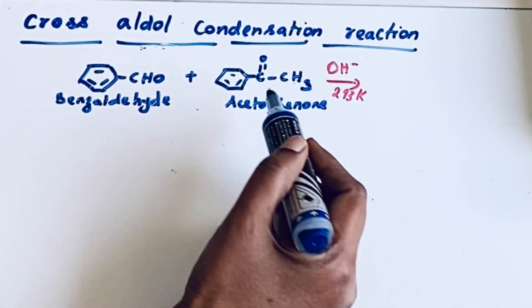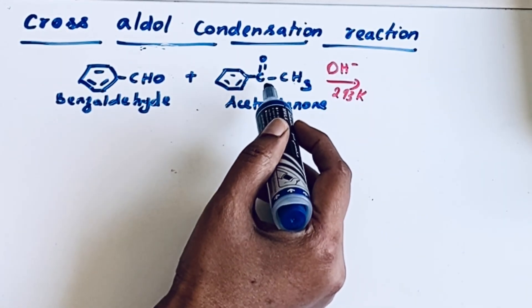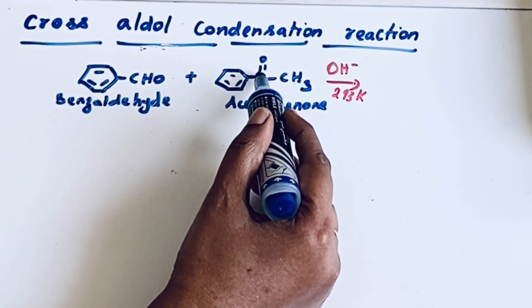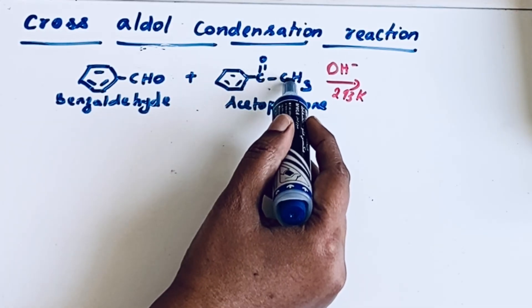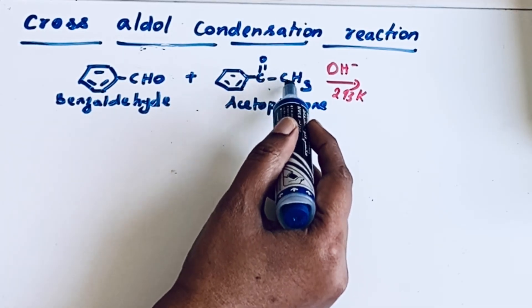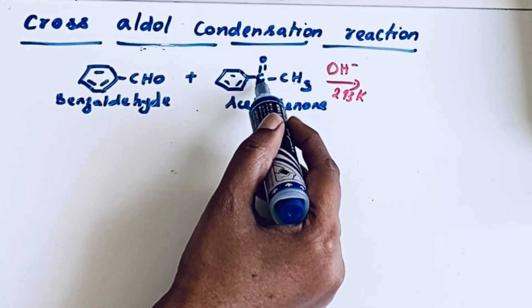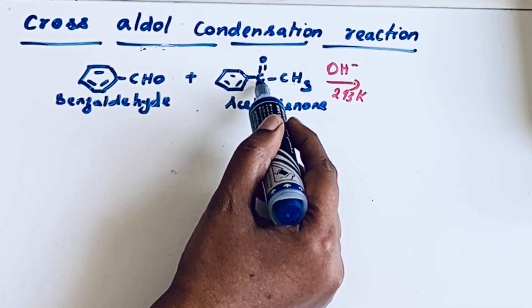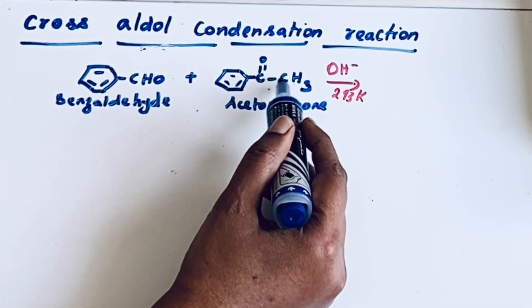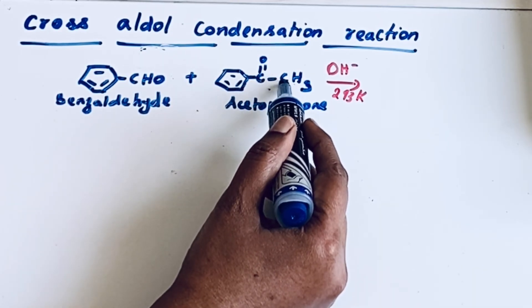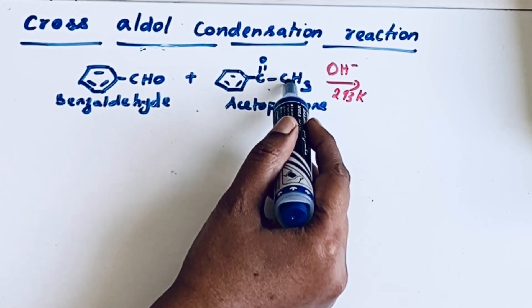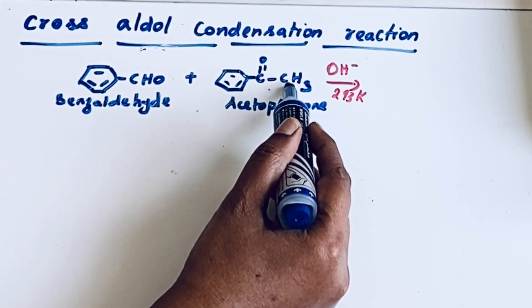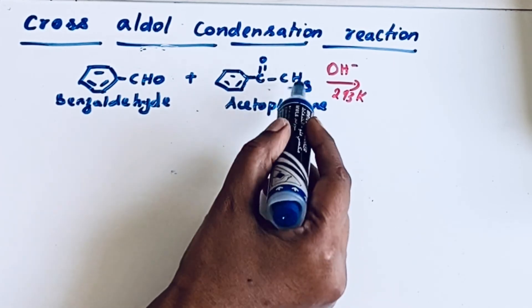First, what is alpha hydrogen? The hydrogen which is present next to the carbonyl group is called alpha hydrogen. So here C double bond O is the carbonyl group, that is the functional group. The next carbon has hydrogen attached, and so there are three alpha hydrogens.